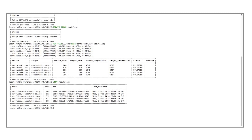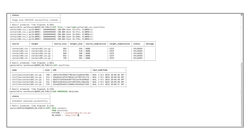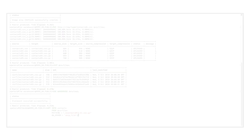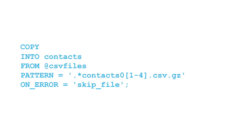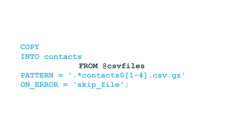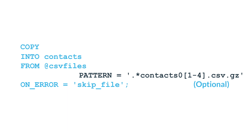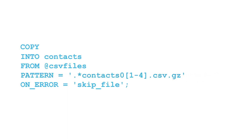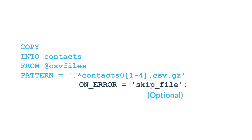Now we are ready to load data from the staged files into the Contacts table. First, specify a virtual warehouse to use, then use the COPY command to load the files. INTO specifies the table where the data will be loaded. FROM identifies the location of the staged files — in this case, the CSV files stage. PATTERN specifies the data files to load; here we are loading from data files with names that include the numbers 1 through 4. ON_ERROR tells the command what to do when it encounters errors in the file. Snowflake provides powerful options for error handling while data loading, which will be covered in a later video.